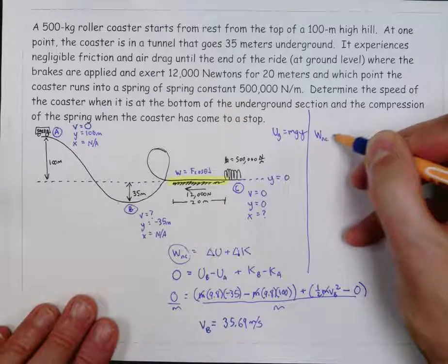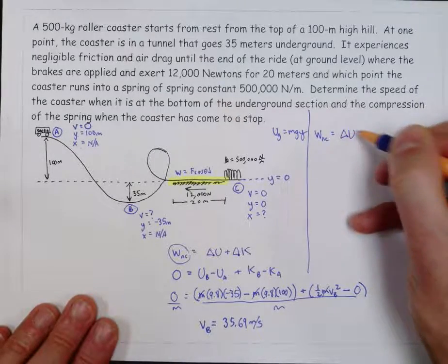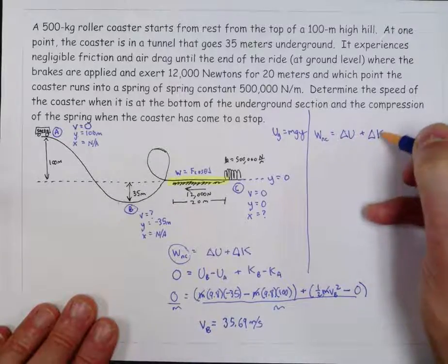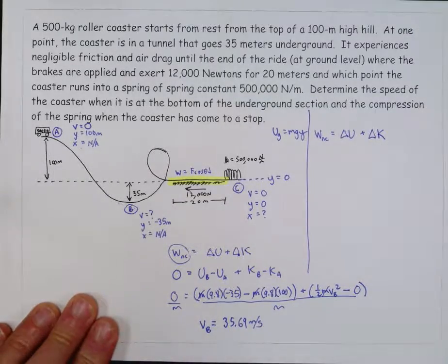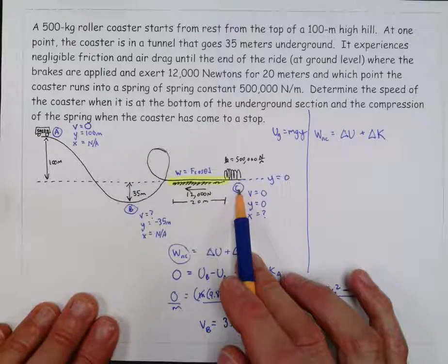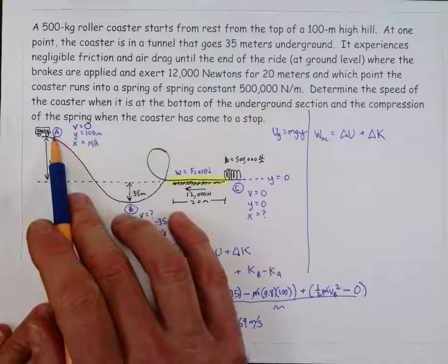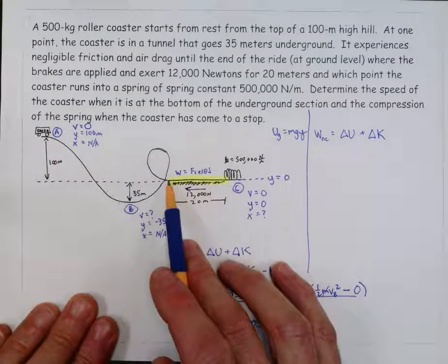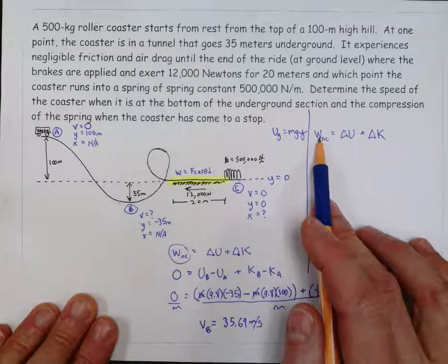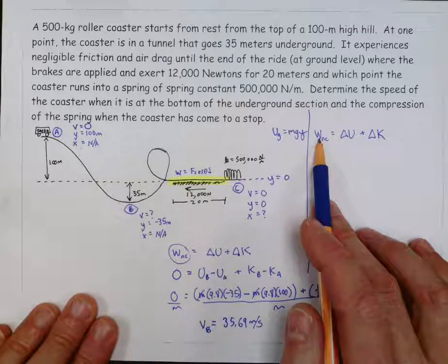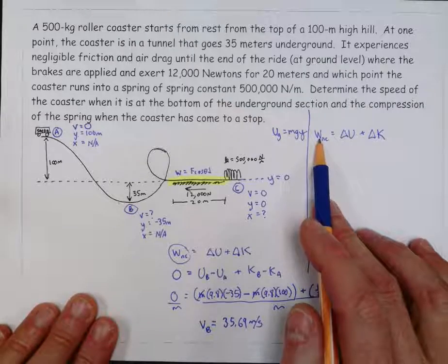So maybe I'll do that over in this section of the paper. So I'm going to, again, use w and c equals delta u plus delta k. And again, I'm going to compare a to c. But now, a little bit different. As you move from a to c, you're going to go through this section where there's friction, where there is a non-conservative force. You've got to include that in your calculation.